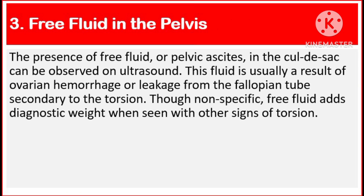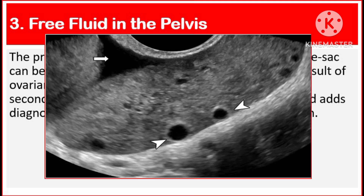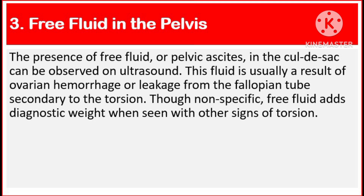Number 3: Free fluid in the pelvis. The presence of free fluid or pelvic ascites in the cul-de-sac can be observed on ultrasound. This fluid is usually a result of ovarian hemorrhage or leakage from the fallopian tube secondary to the torsion. Though non-specific, free fluid adds diagnostic weight when seen with other signs of torsion.